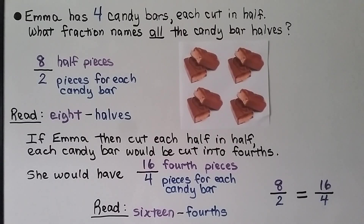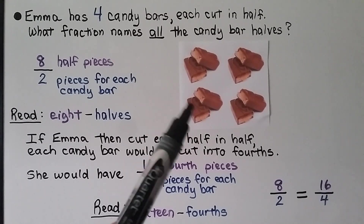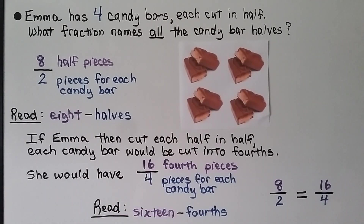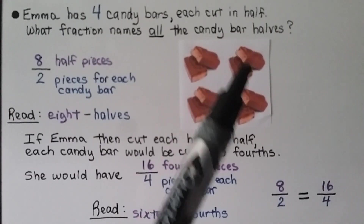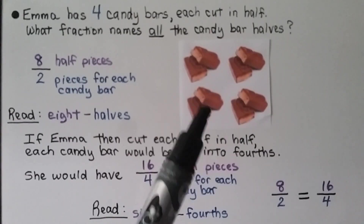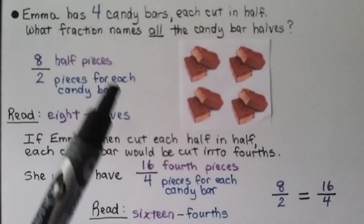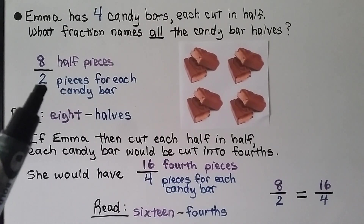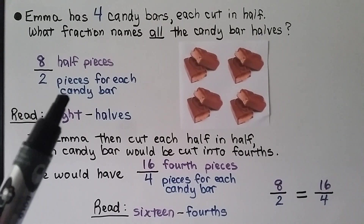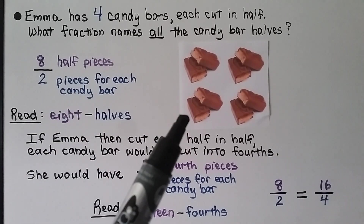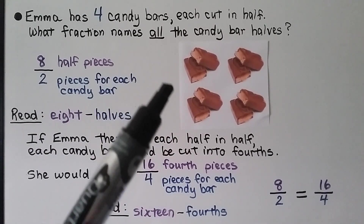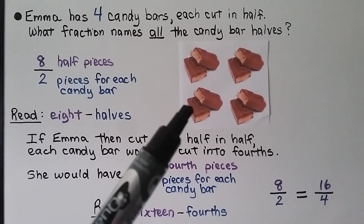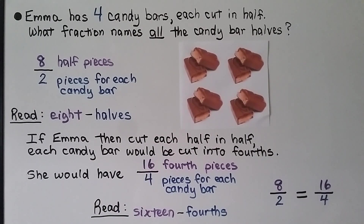Emma has four candy bars each cut in half. What fraction names all the candy bar halves? We have one, two, three, four, five, six, seven, eight half pieces. Two would be our denominator because that's how many pieces each candy bar is cut into. We have eight half pieces — eight halves.